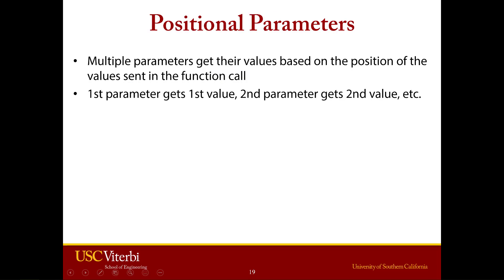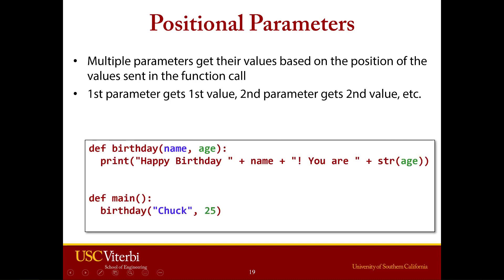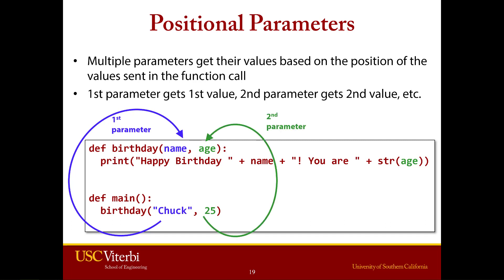Often we want to pass in more than just one value. Python uses a few different techniques, but one we're going to focus on is positional parameters. Positional parameters basically means that the order you pass the arguments in is the order they'll be put into the parameters. For example, we have a function that prints a happy birthday message with name and age. When we call the function, the first argument goes to the first parameter, name, and the second goes to the second parameter. This order is determined automatically by Python by where it falls in the list — item one, item two — based purely on position.